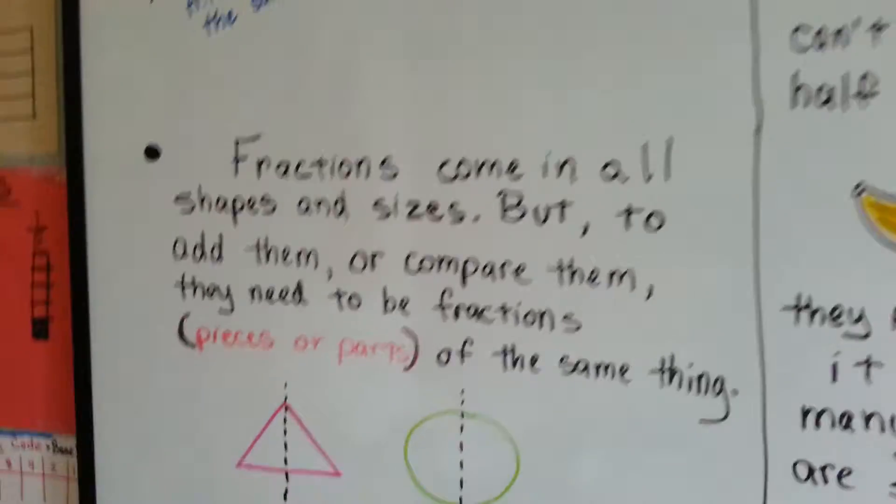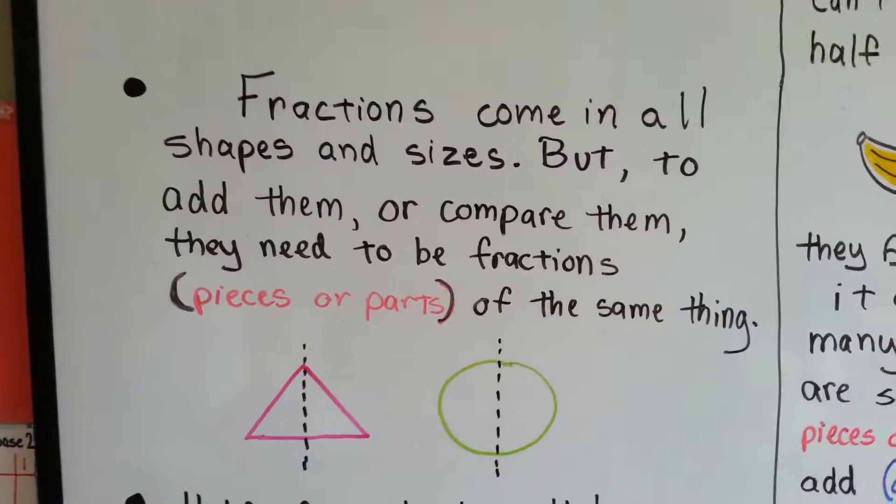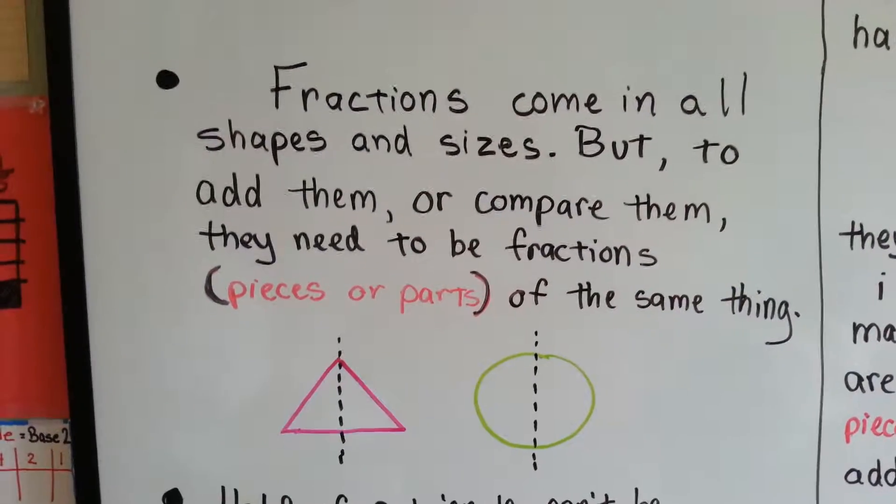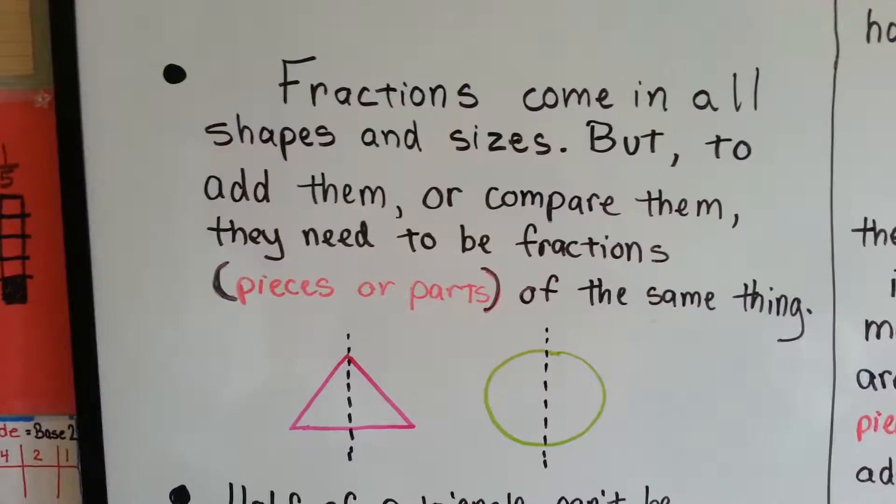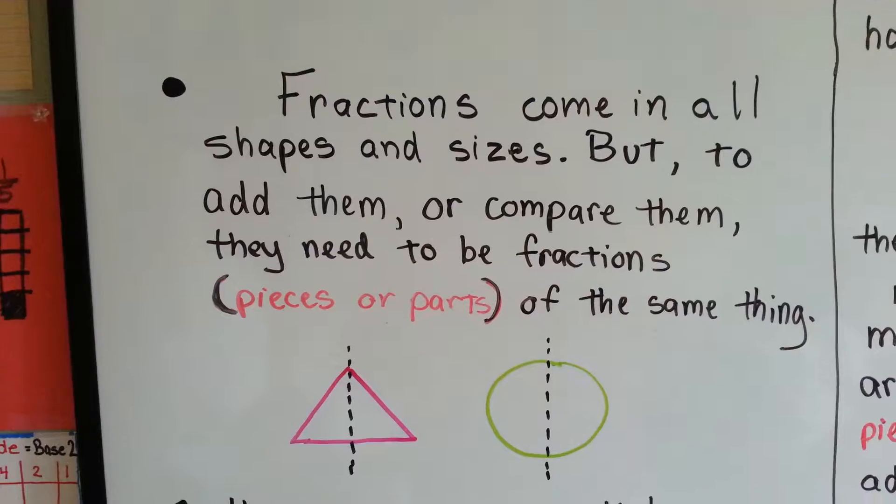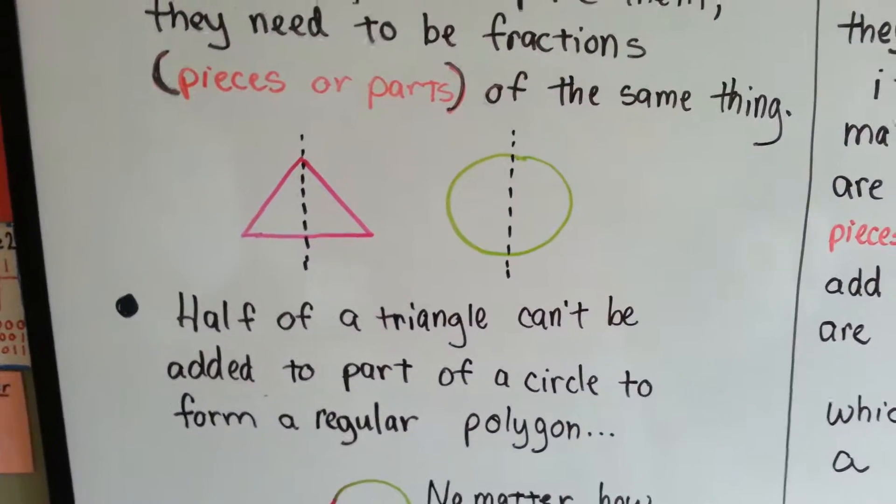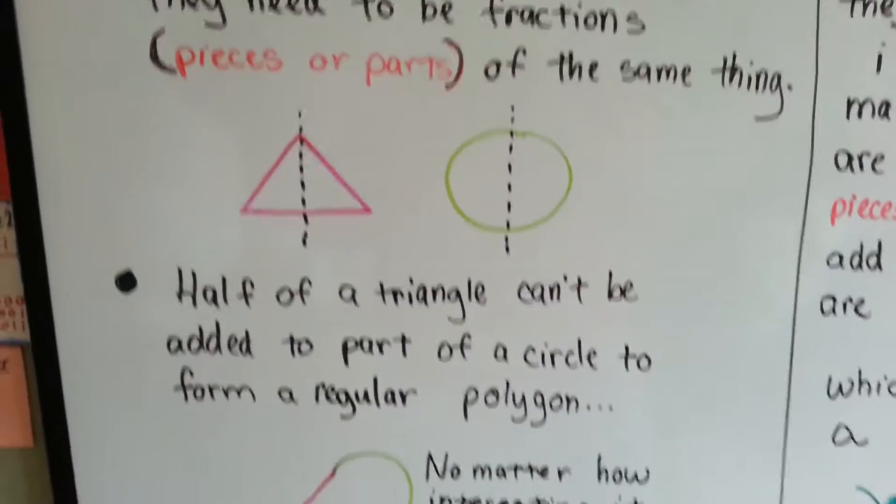Let's take a look at this. Fractions come in all shapes and sizes, but to add them or compare them, they need to be fractions, pieces or parts, of the same thing. We have a triangle cut in half and a circle cut in half. Half of a triangle can't be added to part of a circle to form a regular polygon.